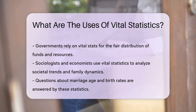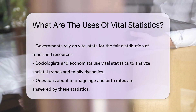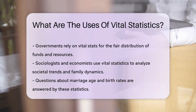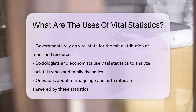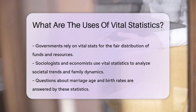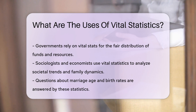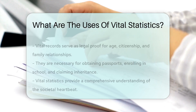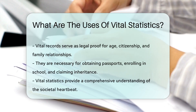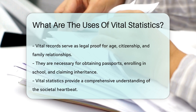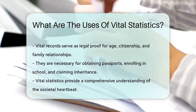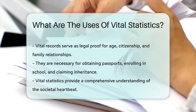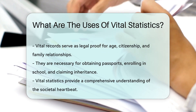In the world of social sciences, vital statistics are like the canvas for painting societal trends. They help sociologists and economists understand the structure and dynamics of families and economies. They answer questions like: are people marrying later? Or, is the birth rate going up or down?